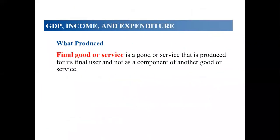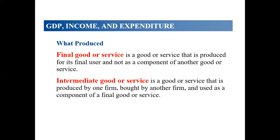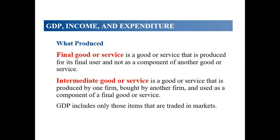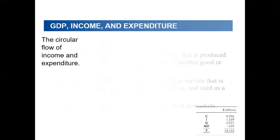After explaining the value added approach, we focus on final goods and services produced in final form. Intermediate goods are those that need another process to reach the final form. GDP includes only items that are traded as final goods, not intermediate goods.